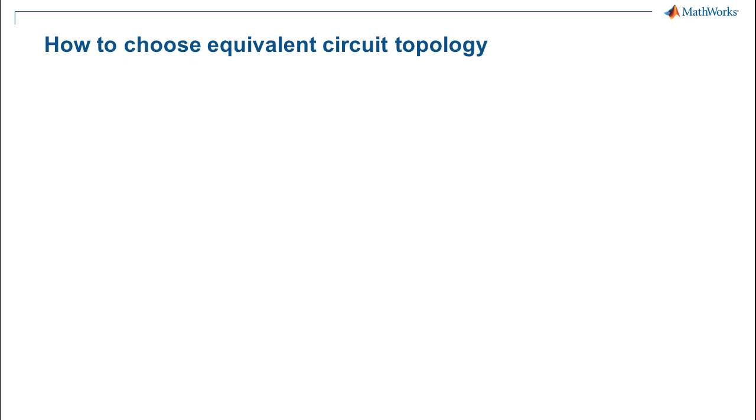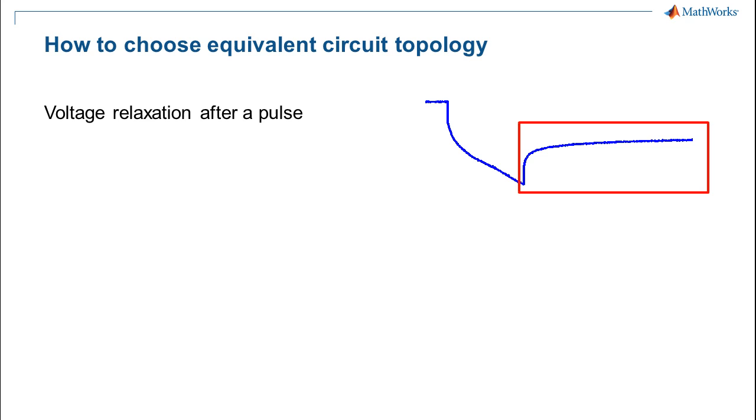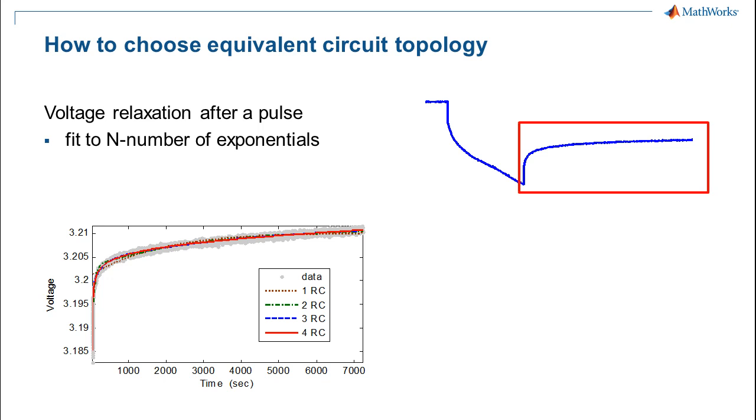The first step was to choose the circuit topology. For lithium chemistry, the question is often how many RC branches are required. To determine this, we looked at the voltage relaxation dynamics after the pulse. We then fit that data to exponential equations of different orders from 1 to 4. And we got a result like this for the curve fitting to the transient response.